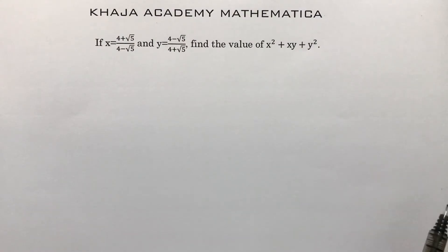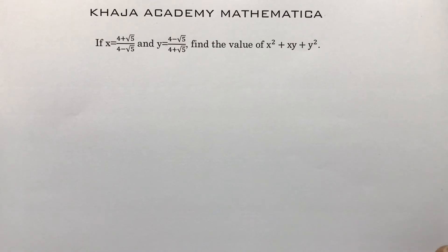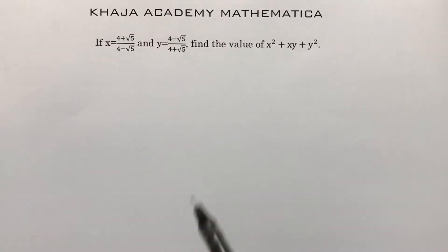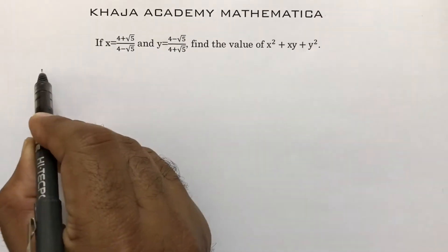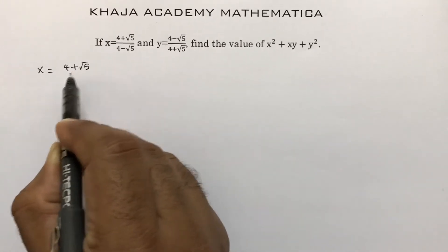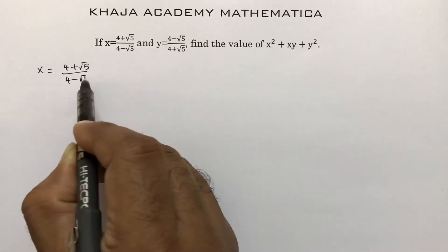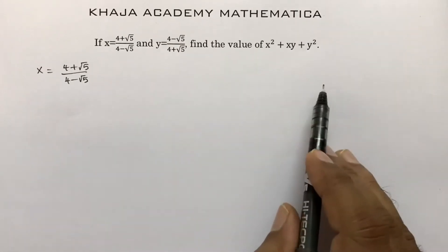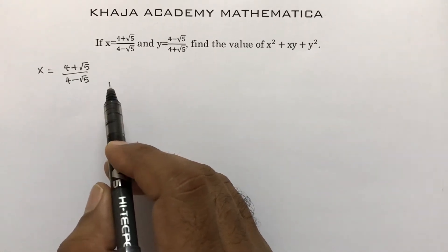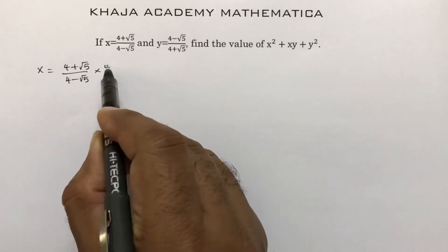If x equals (4 plus root 5) by (4 minus root 5) and y equals (4 minus root 5) by (4 plus root 5), we need to substitute the values. First, find the value of x. Instead of directly substituting, rationalize x by multiplying by (4 plus root 5) over (4 plus root 5).